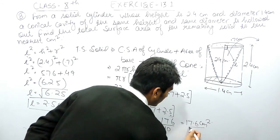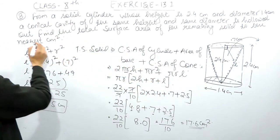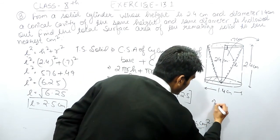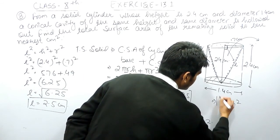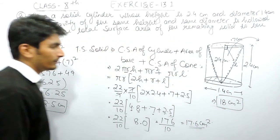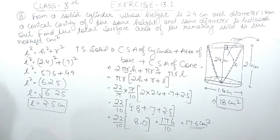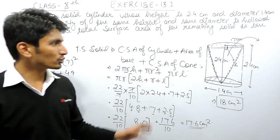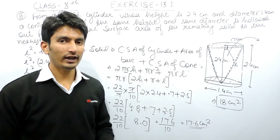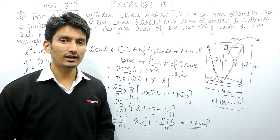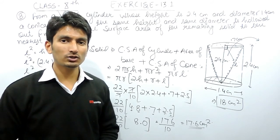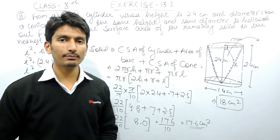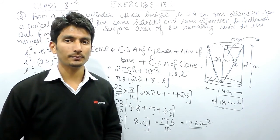Since we need the answer to the nearest centimeter square, 17.6 rounds to 18 centimeter square. So 18 cm² is the answer to this question. I hope you have understood how to solve it. If you like this video please subscribe to our channel. If you have any problem in maths you can contact us — the phone number, email address, and WhatsApp number are given below in the description. Thank you.